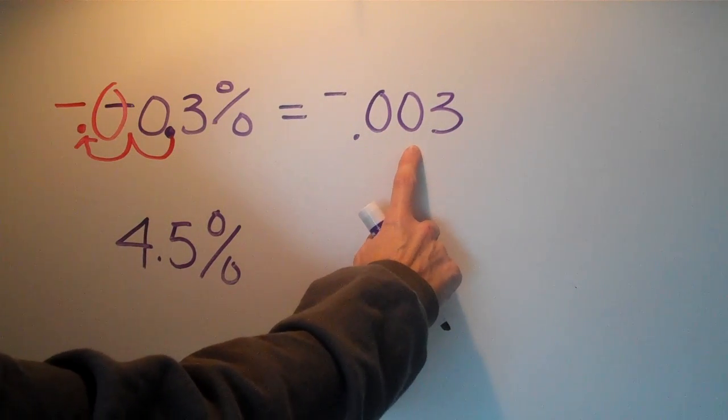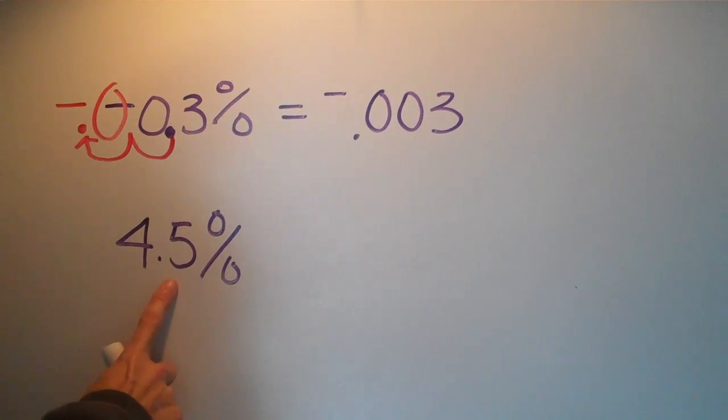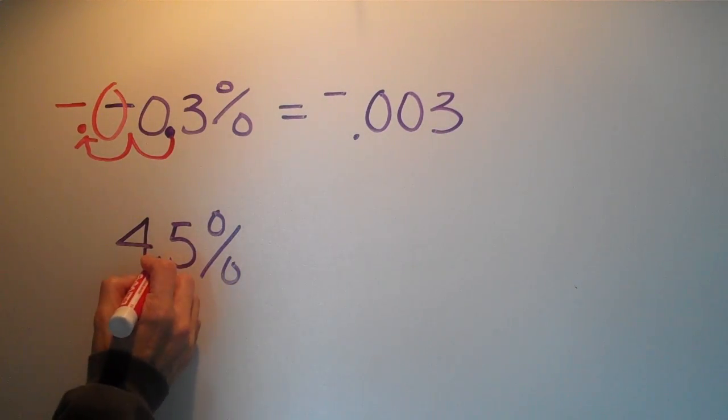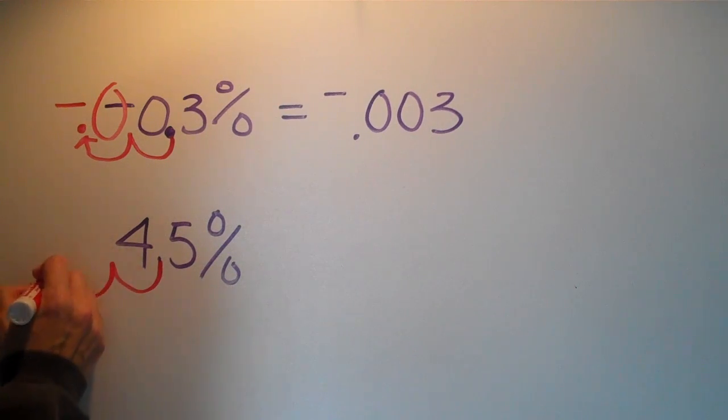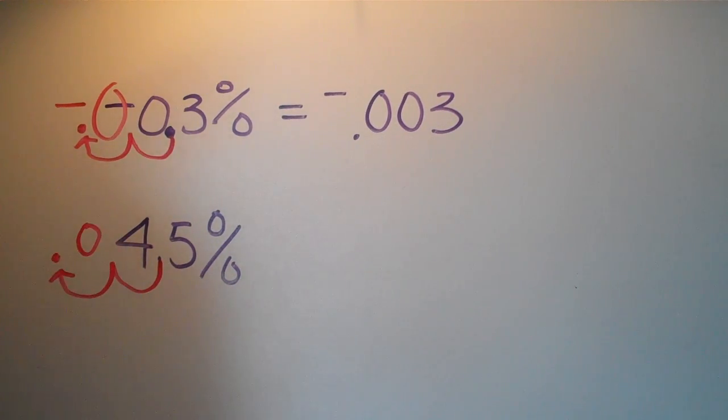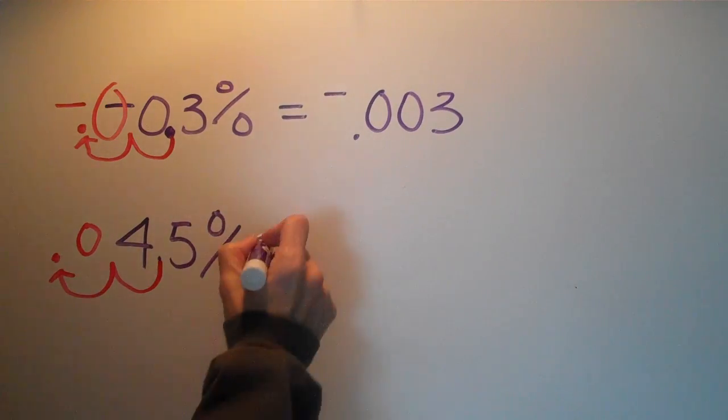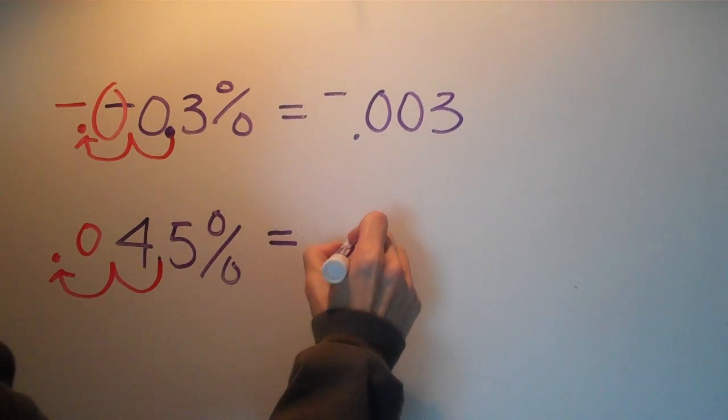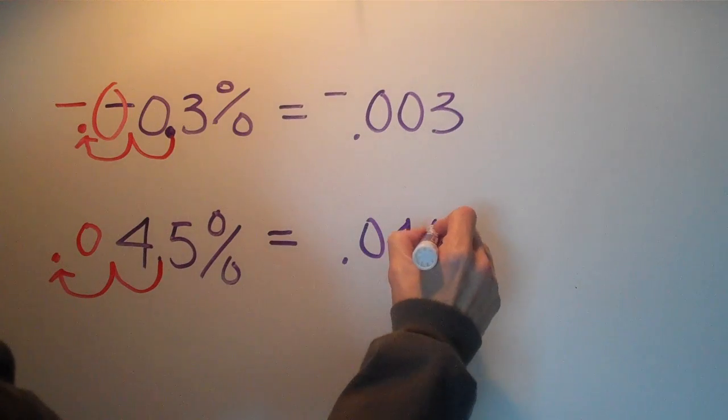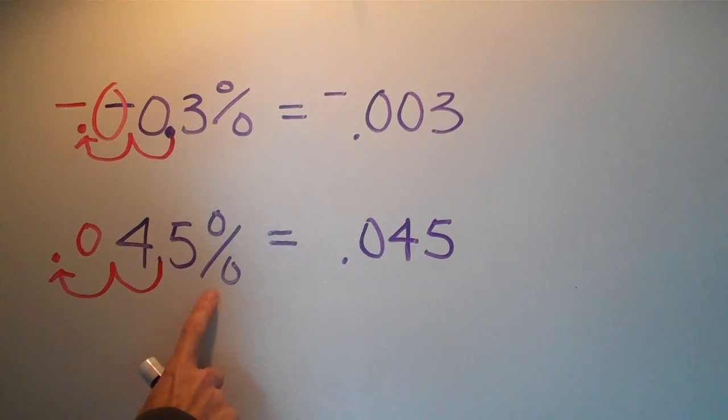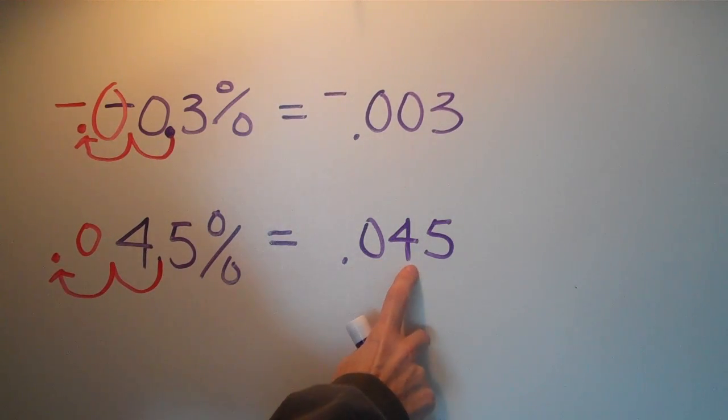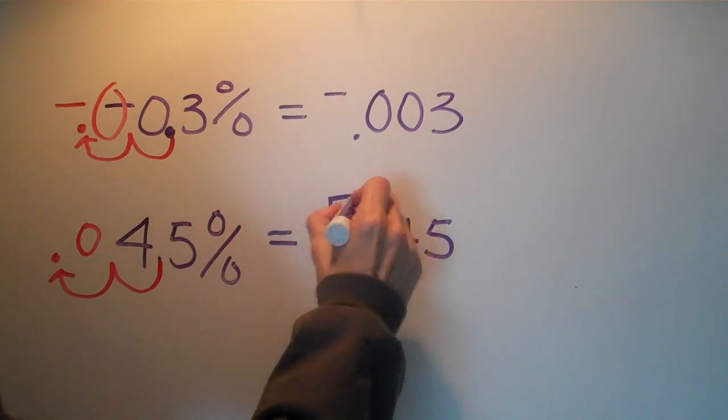Let's do the same thing with 4.5%. We're going to take that decimal, we're going to move it two places to the left and add that zero placeholder. Let's rewrite it so we can see what it is. So this number becomes tens, hundreds, thousandths - forty-five thousandths, and that's our final answer.